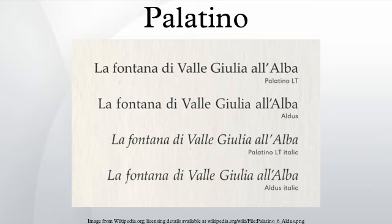Palatino has been available in all major typesetting systems over the years, including Linotype and Hot Metal versions. Certain Hot Metal versions of Palatino, of smaller x-height, are considered both more legible and elegant to many people. The first digitization was done by Bitstream, which, however, refused to license the name Palatino from Linotype, calling its version Zapf Calligraphic instead. Since then, several foundries have produced Zapf original versions.